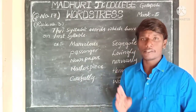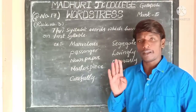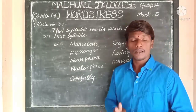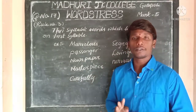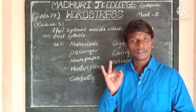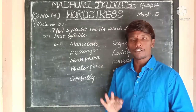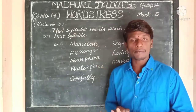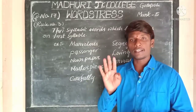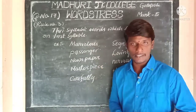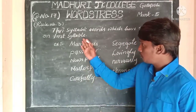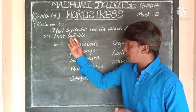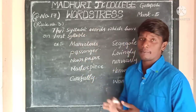Yesterday I mentioned 4 kinds of syllables: monosyllabic word, disyllabic word, trisyllabic word, and tetrasyllabic word. Now we are talking about trisyllabic words. Trisyllabic words have stress on their first syllable.